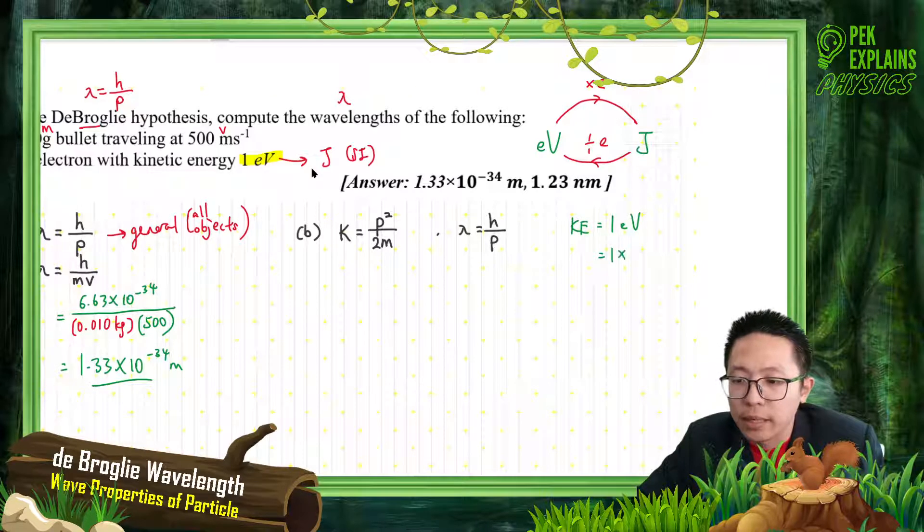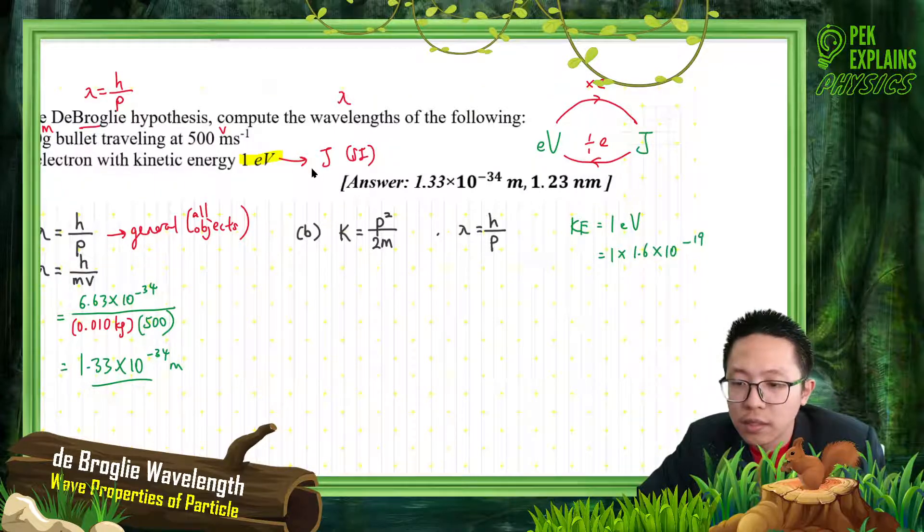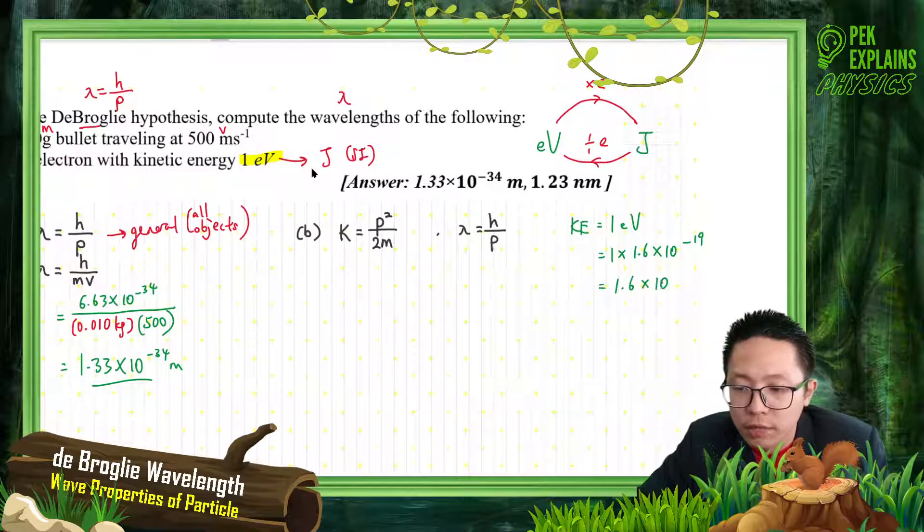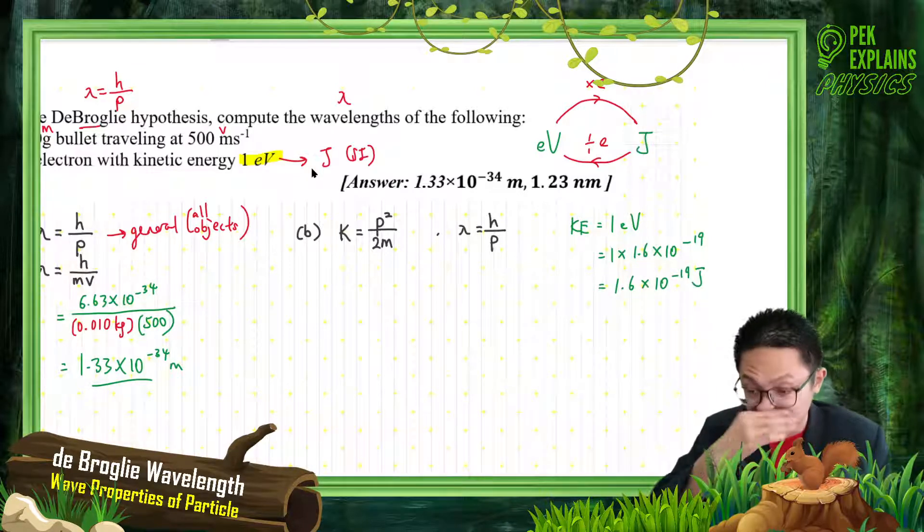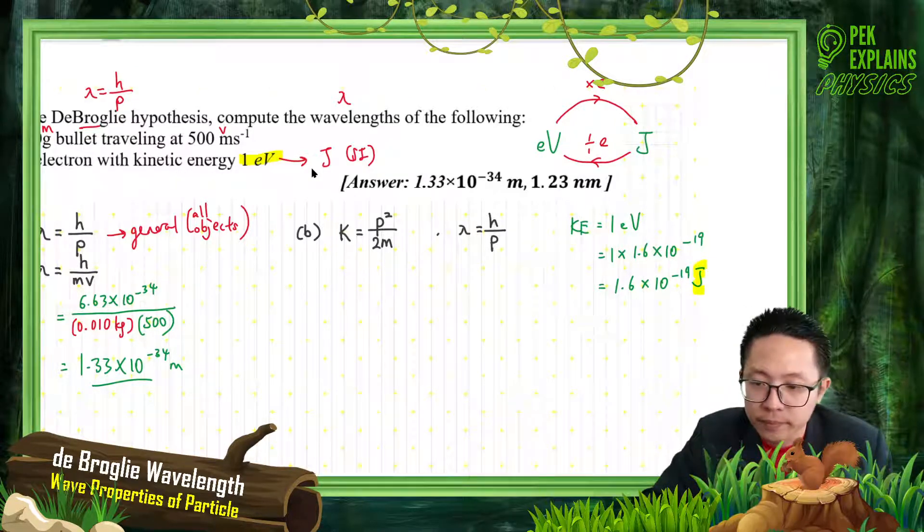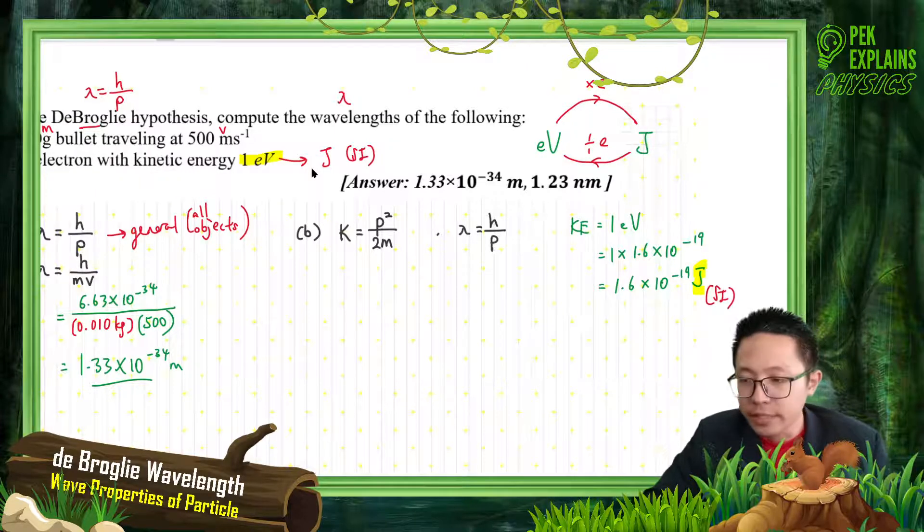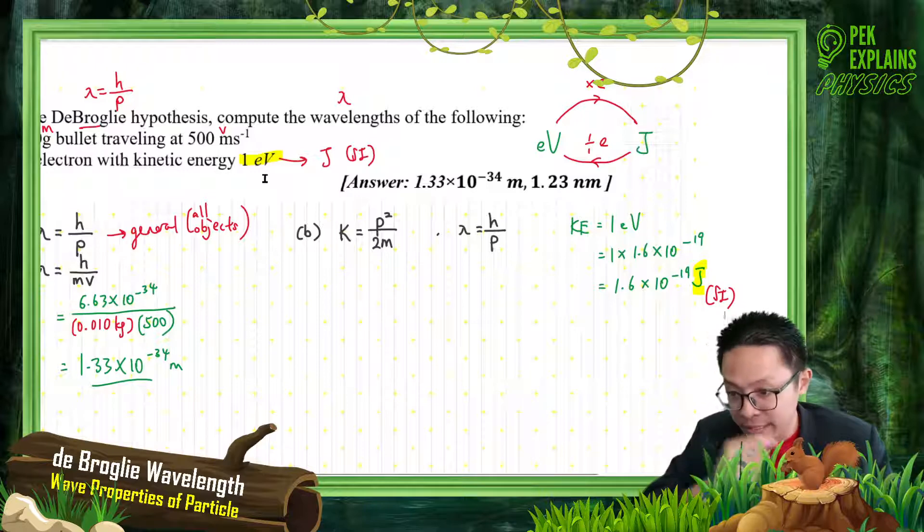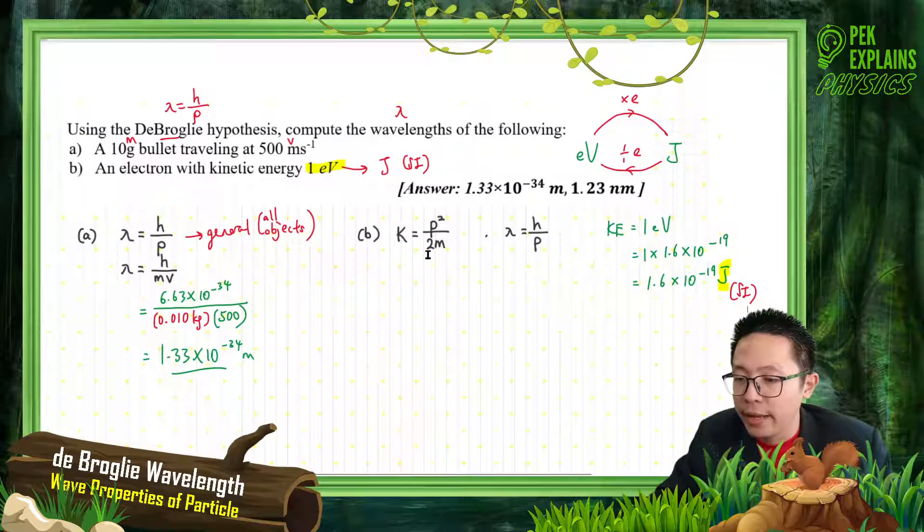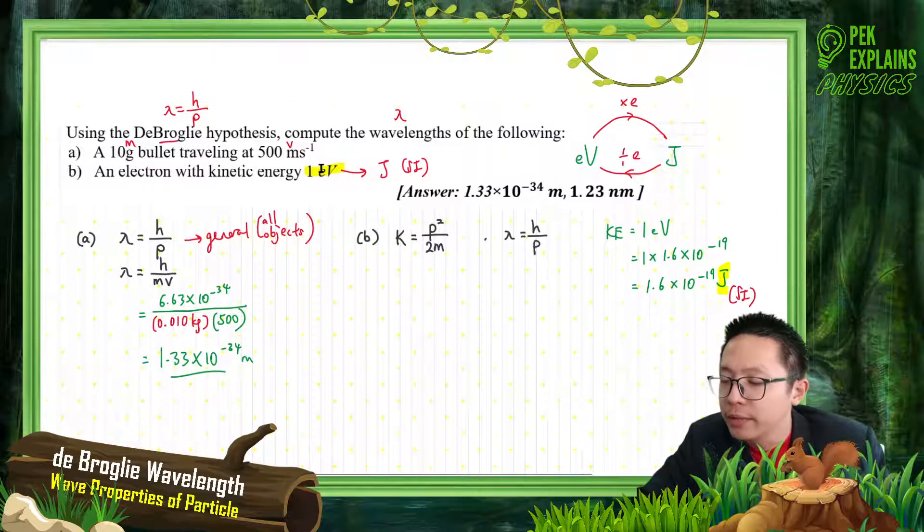Now I multiply by electron charge, which is 1.6 exponent negative 19. Very simple - this is 1.6 exponent negative 19 joules. That's the energy it has, already in SI unit, in joules. Once I got this kinetic energy, I substitute. I have this kinetic energy. What is the use of this kinetic energy? I want to find the wavelength.